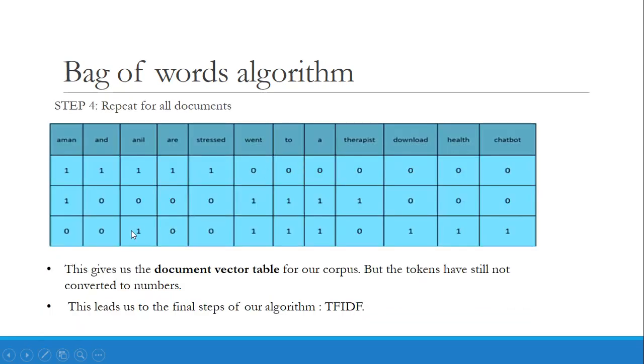So Anil, went, to, a, download, health, and chatbot—only these words will have a value of one because they appeared only once in the document.